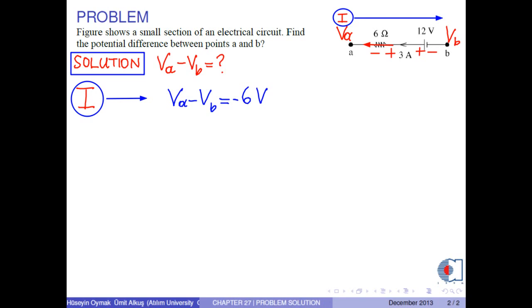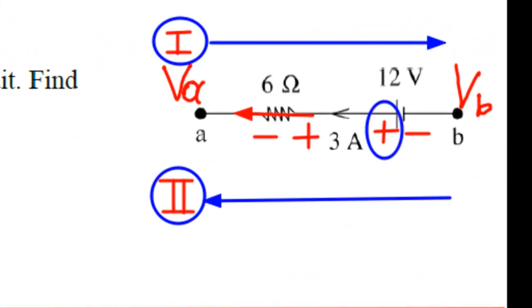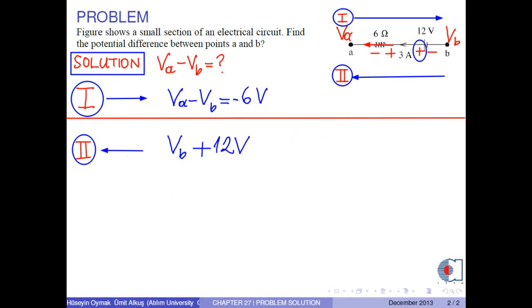In order to obtain the same result, let's start with B to reach A. The first potential is Vb. For the battery, now the leftmost sign is positive, which gives the potential positive 12 volts.